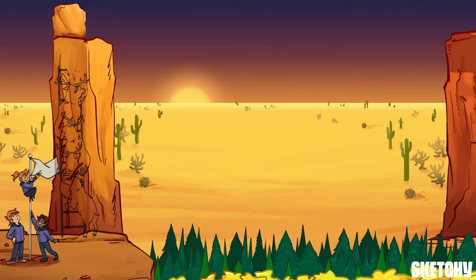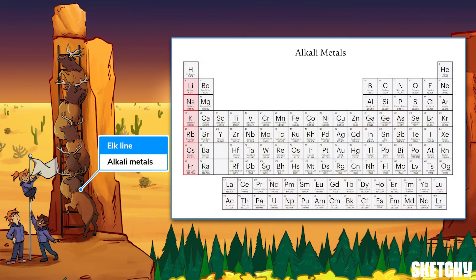First up, the elements in group 1 are called the alkali metals. So we've got elk in a line to remind you of alkali. But notice that these elk don't reach the very top of the rock. That's because hydrogen, which is on the top left of the periodic table, isn't considered an alkali metal even though it's in group 1. Since it's only got one single electron, it behaves a little differently. But we'll come back to hydrogen in a bit.